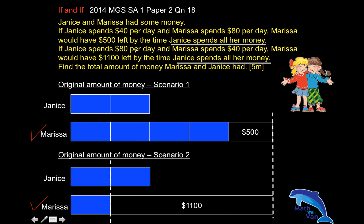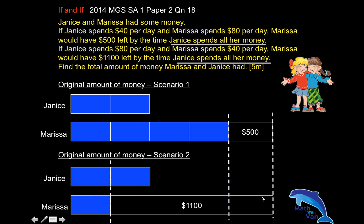What is crucial here is that in Marissa's original amount of money, one scenario gives four units plus $500, and the other gives one unit plus $1,100. So whatever the difference — taking away $500 — in units we know that it is three units, and the value is $1,100 take away $500. So basically we have solved the whole equation just with the model.